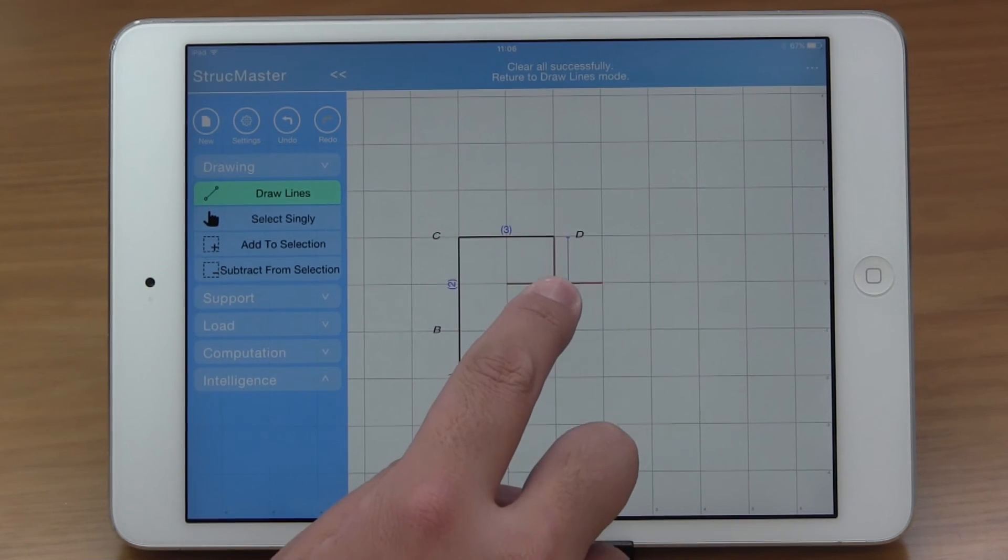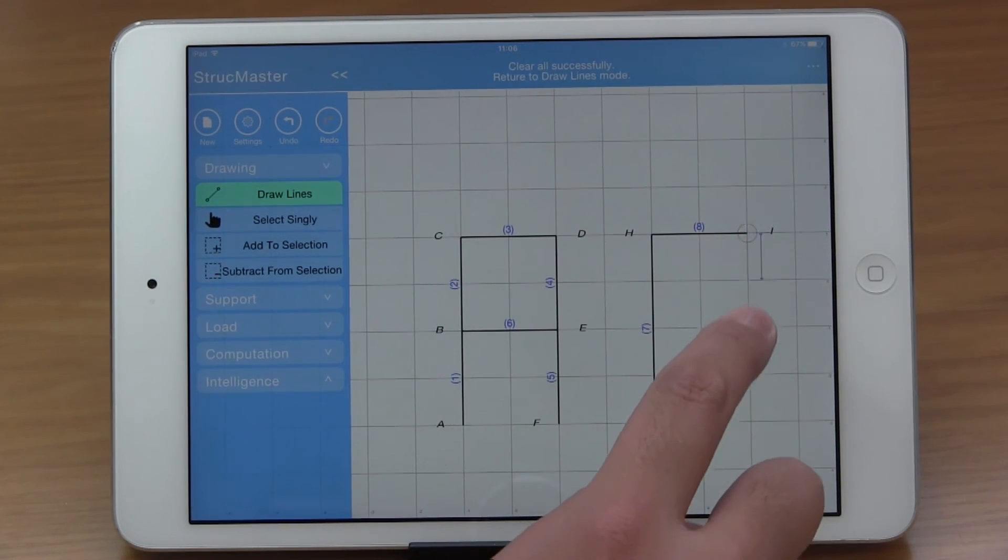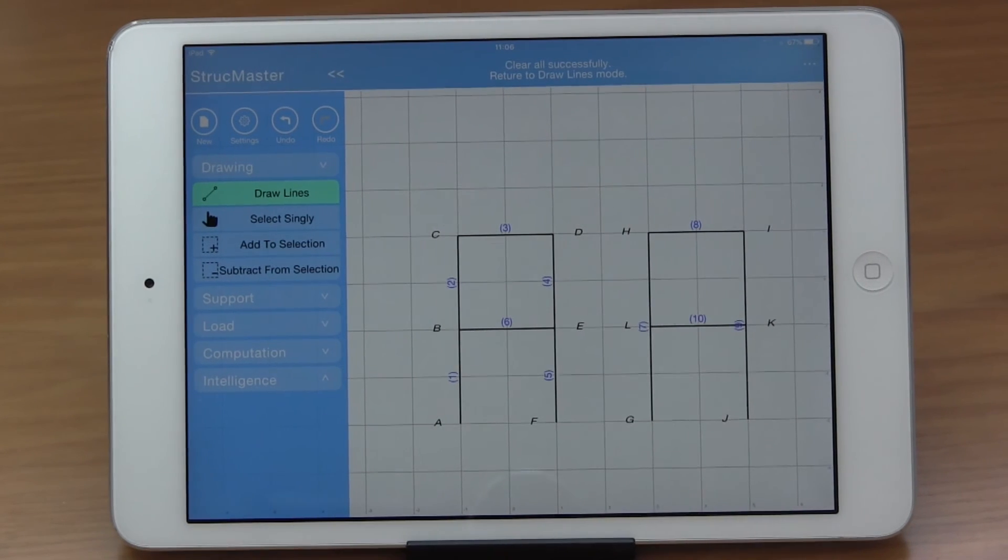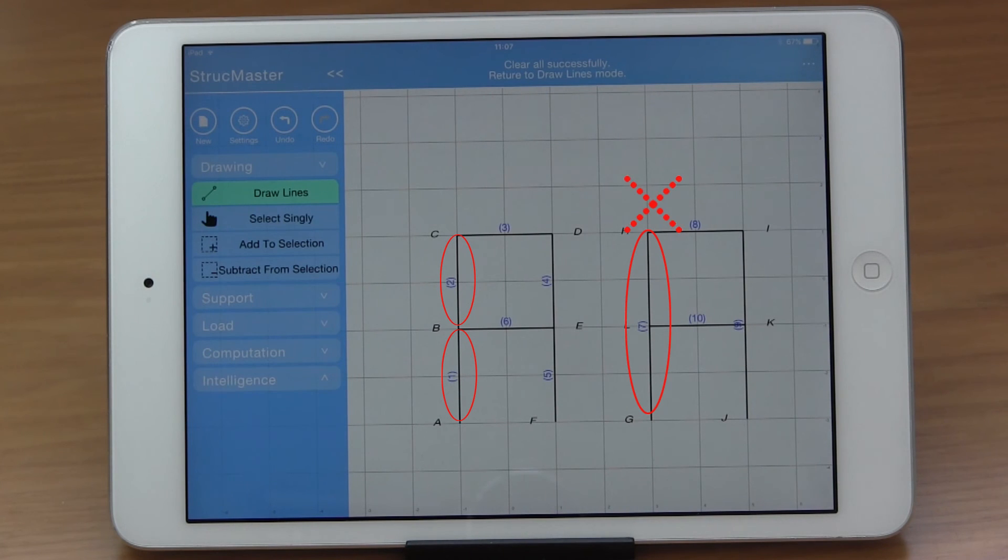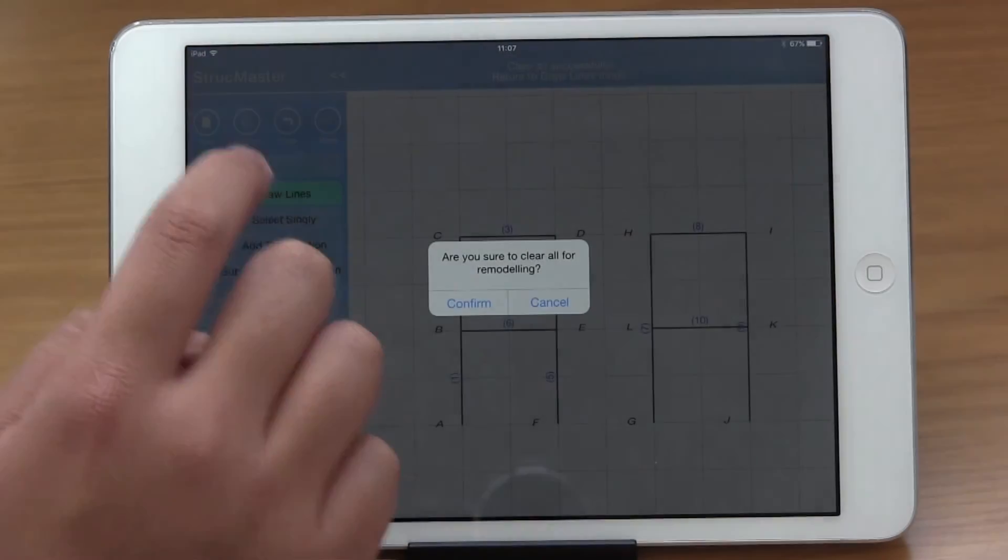When you define such a structure, you should draw them separately, not this way. All computing methods will treat this case as two separate members connected on a rigid joint. So, define the structure to meet the mechanical guidelines.